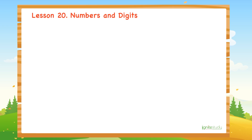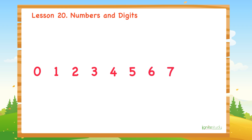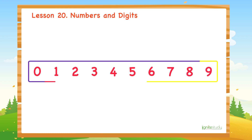Let me tell you the number symbols: 0, 1, 2, 3, 4, 5, 6, 7, 8, 9. The number symbols that we use to form numbers are called digits.